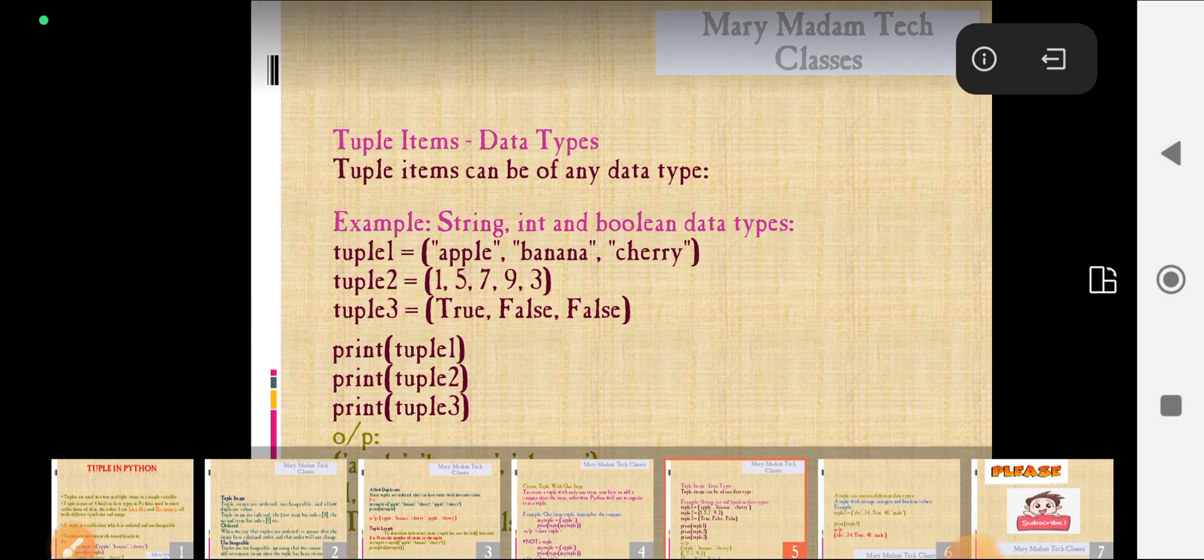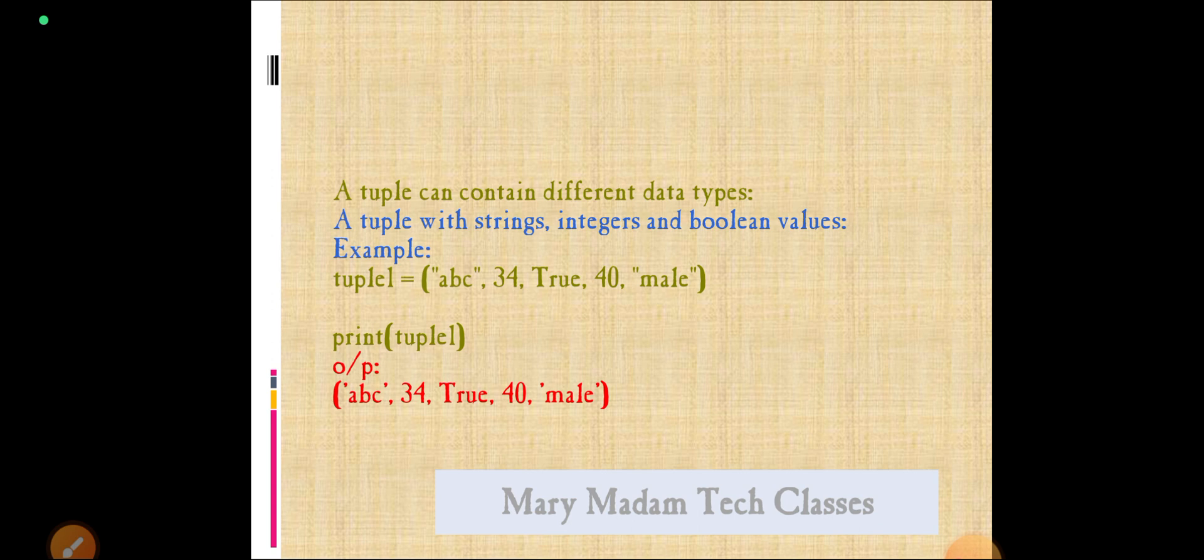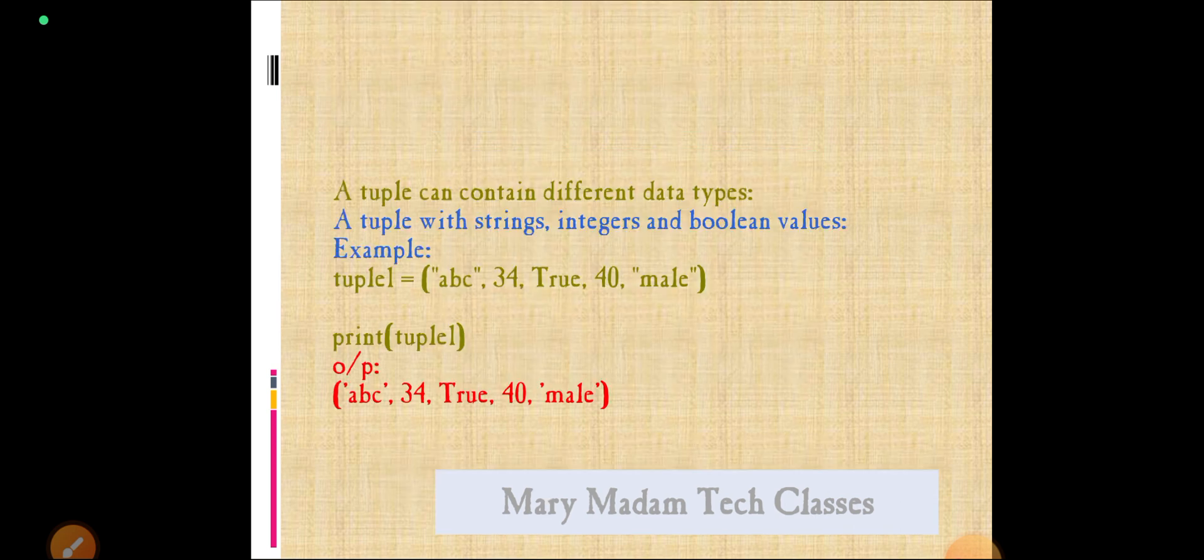Next, not only this one, we can also write in a single data type. See here example: ABC as a string, 34 integer, true is a boolean, 40, and male. You want to print the tuple. The output will be seen like this.